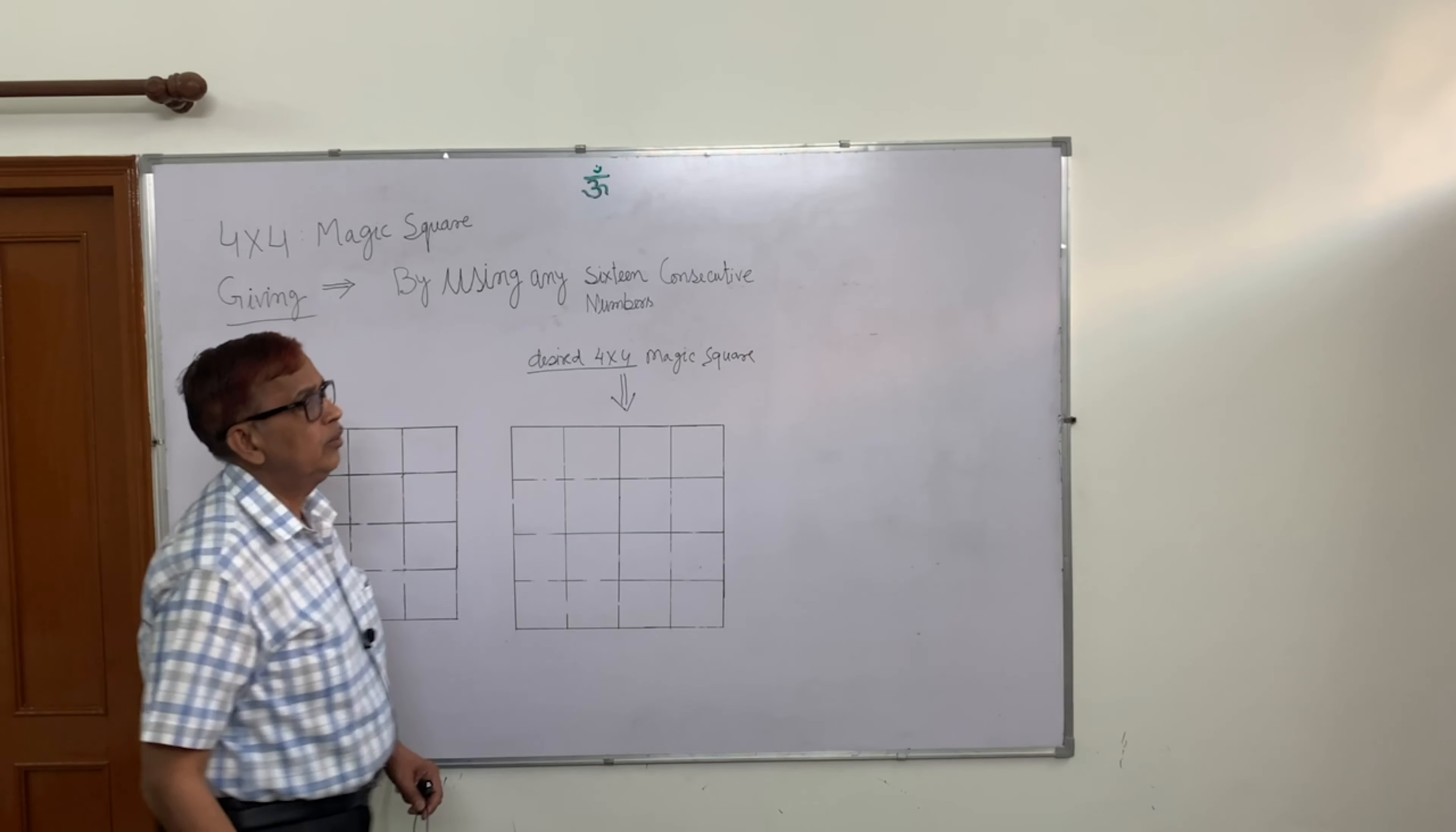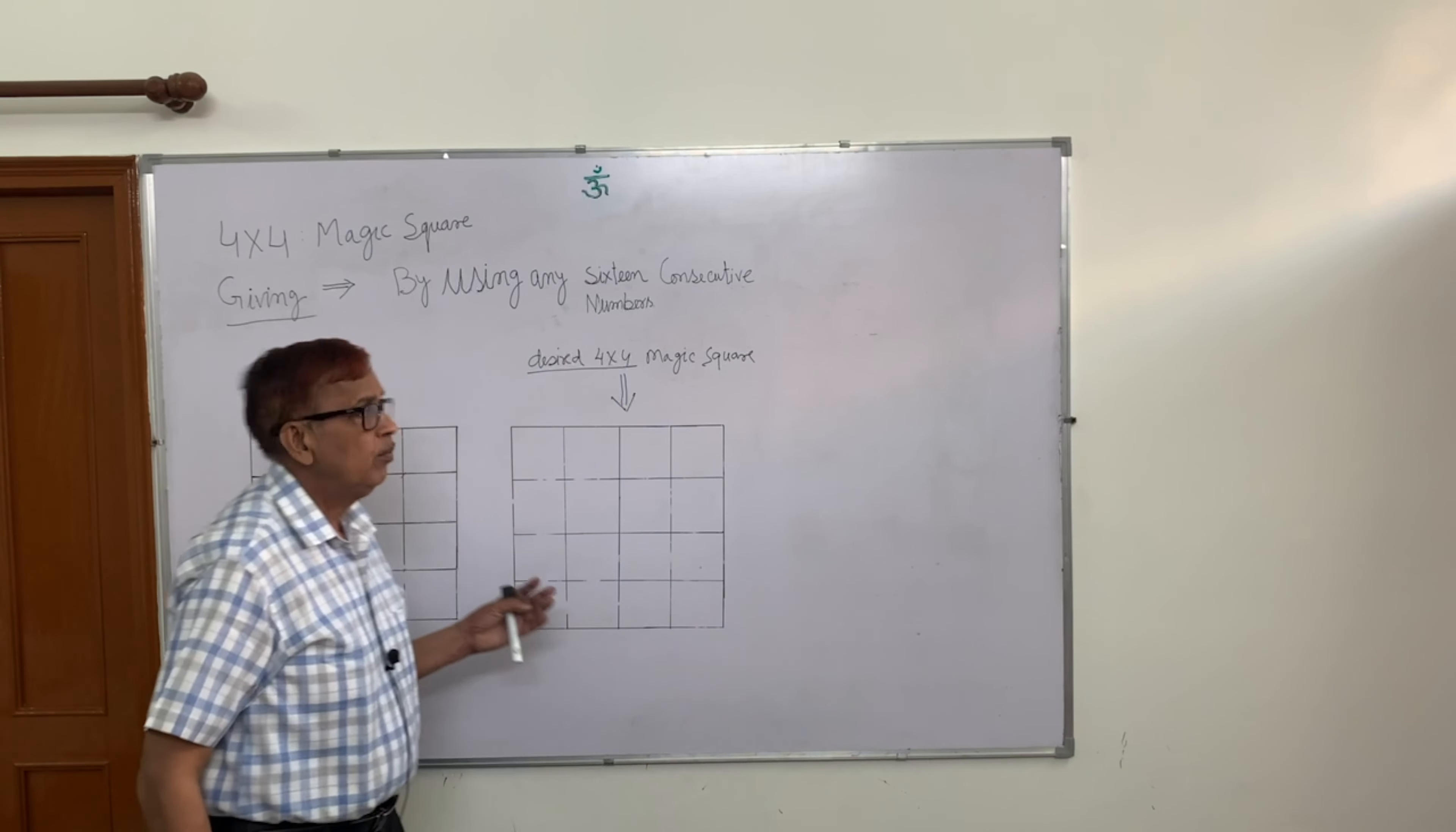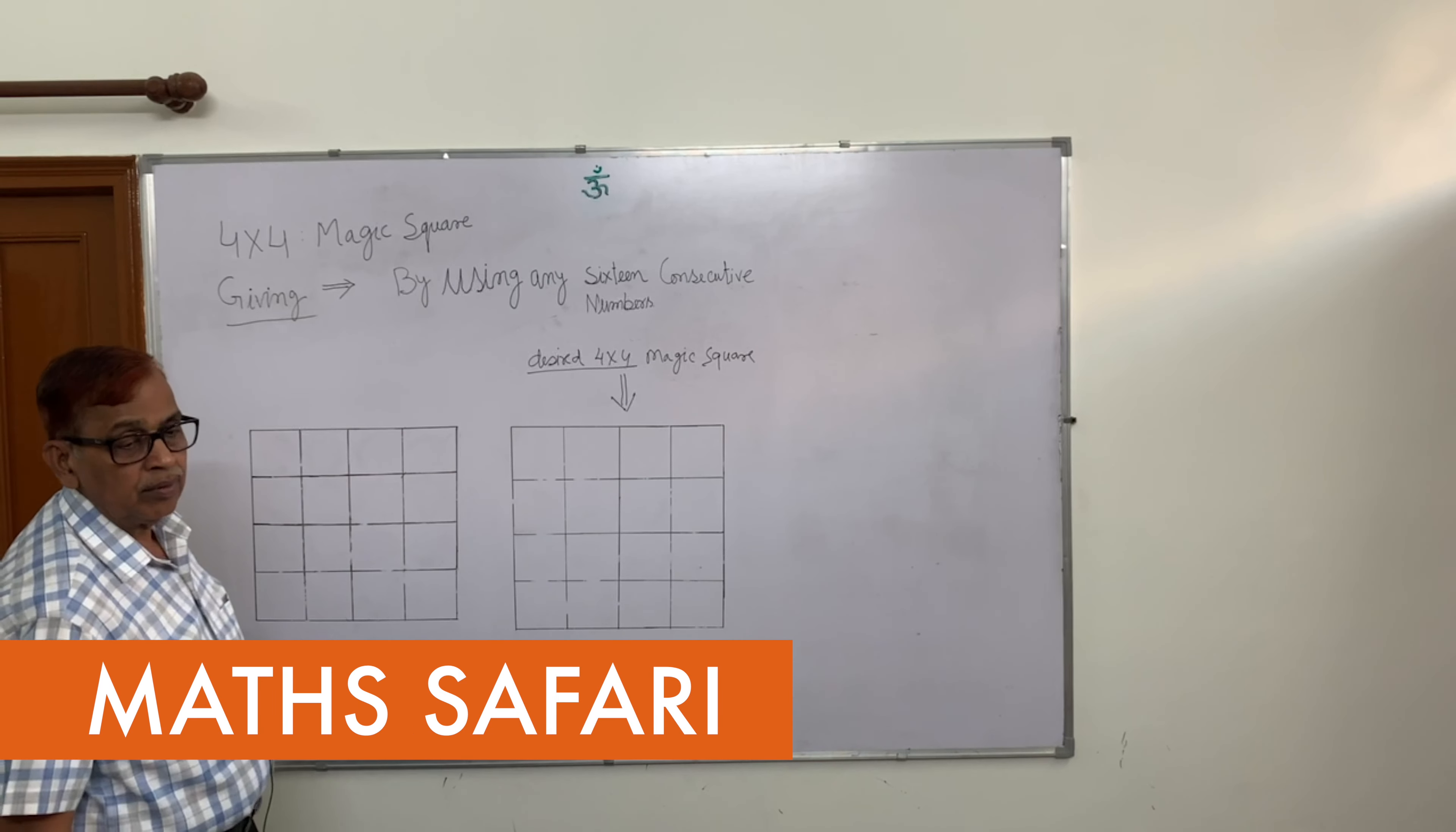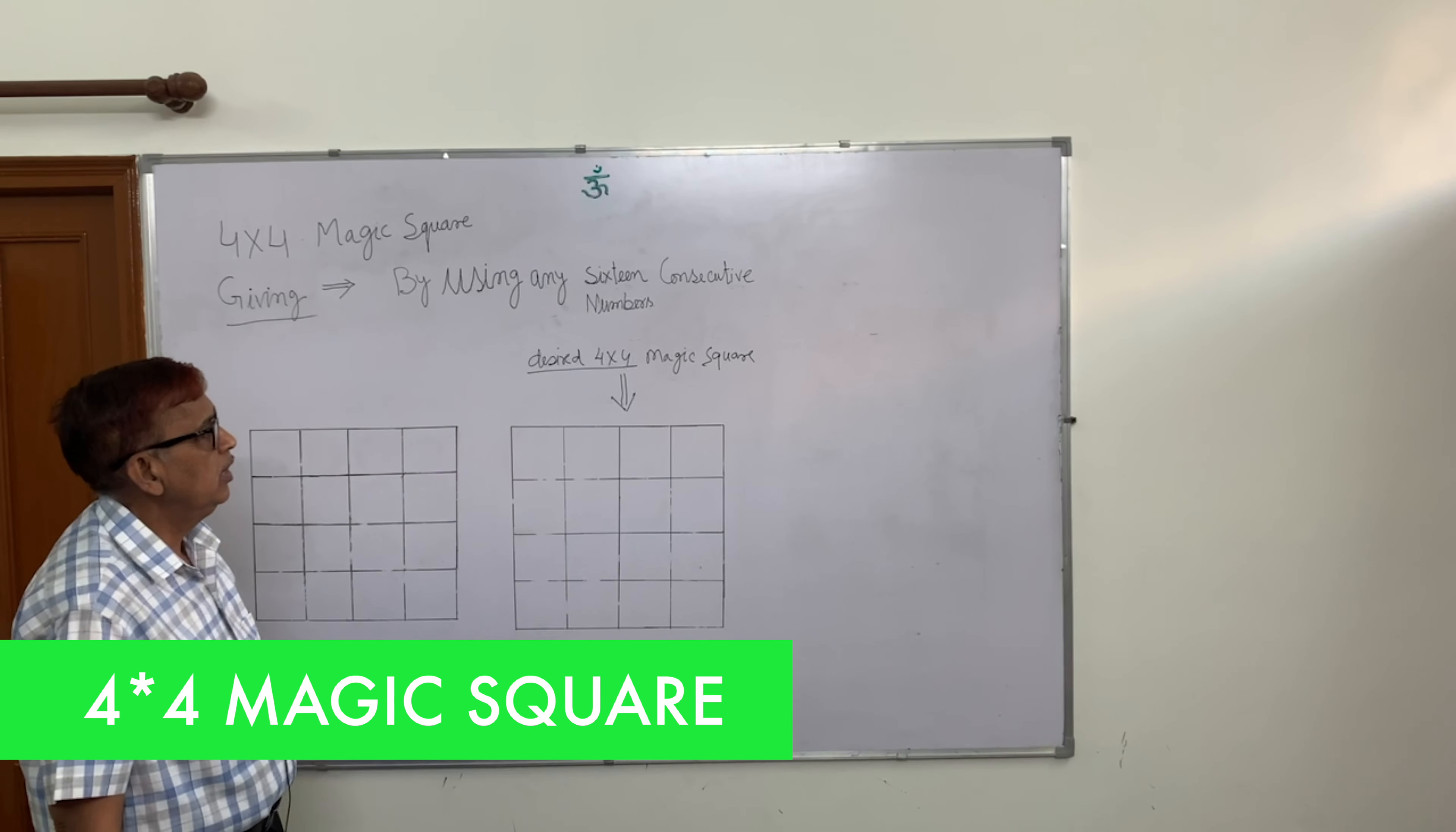Let's go from the Math Safari channel, which is a 4x4 magic square with the help of using any 16 consecutive numbers.